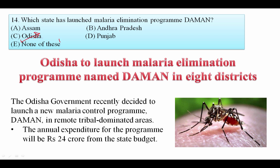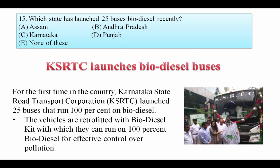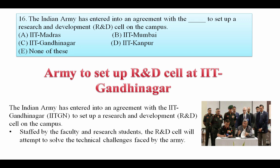Which state has launched 25 biodiesel buses recently? For the first time in the country, Karnataka State Road Transport Corporation launched 25 buses that run 100 percent on biodiesel. The vehicles are retrofitted with a biodiesel kit for effective pollution control. Your answer is Karnataka. The Indian Army has entered into an agreement with IIT Gandhinagar to set up a Research and Development cell on the campus. The R&D cell, staffed by faculty and research institutes, will attempt to solve technical challenges faced by the army. Your answer is IIT Gandhinagar.